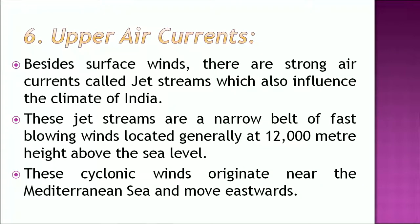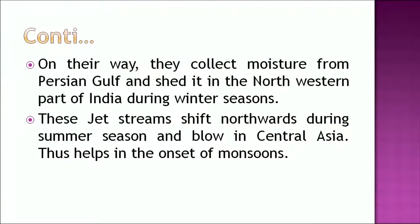Upper air currents also influence the climate system of India. Besides the surface winds, there are strong air currents called jet streams which also influence India's climate. These jet streams are a narrow belt of fast-blowing winds located generally at 12,000 meters height above sea level. These cyclonic winds originate near the Mediterranean Sea and move eastward, collecting moisture from the Persian Gulf and shedding it in the northwestern part of India during winter. These jet streams shift northward during summer season and blow in central Asia, which helps in the onset of monsoon.